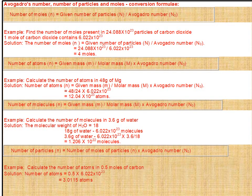Next formula: number of molecules = (given mass ÷ molar mass) × Avogadro's number. Example: calculate number of molecules in 3.6 grams of water. Molecular mass of water = 18g. So 3.6 gram = 6.022 × 10²³ × 3.6 ÷ 18 = 1.206 × 10²² molecules.